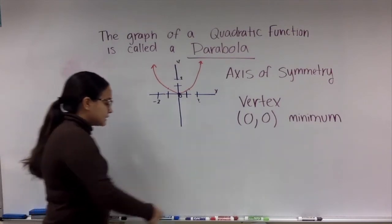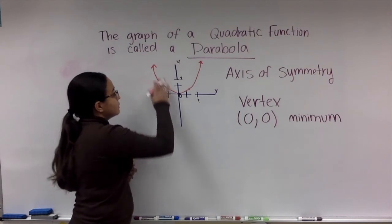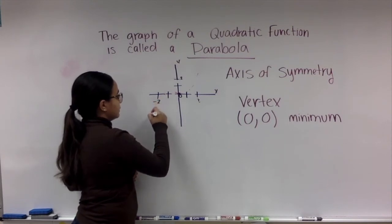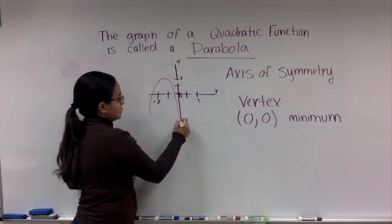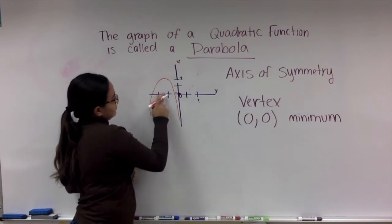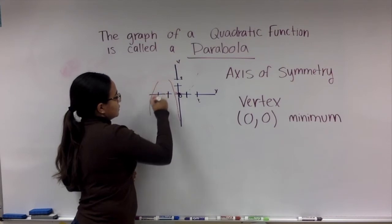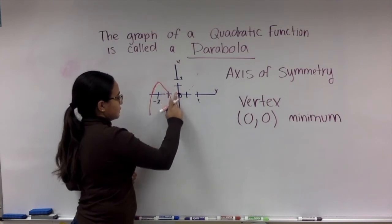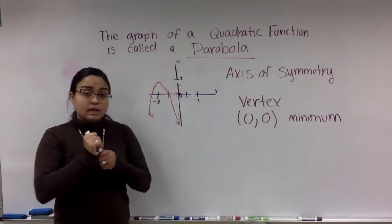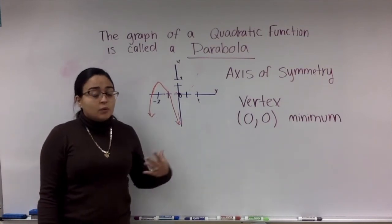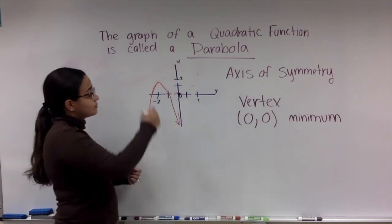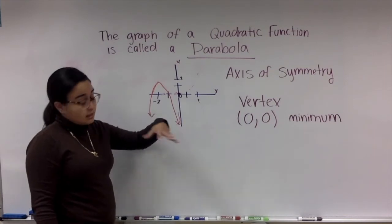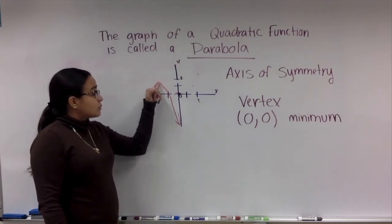Now let's say we have a parabola that's a little different. Let's say we have a parabola that looks like this. How would I identify my vertex? Now, in this case, our parabola is shaped like an upside down U or an N even.